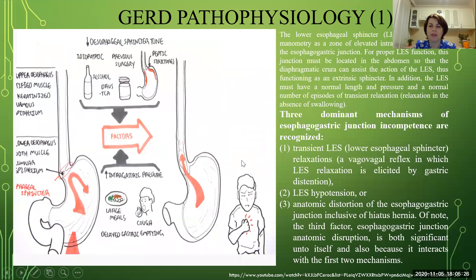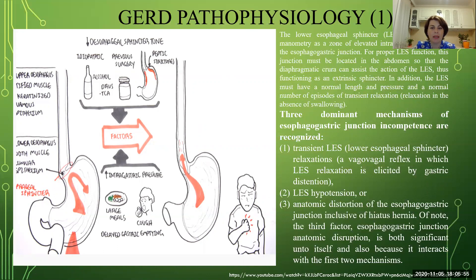The lower esophageal sphincter is defined by manometry as a zone of elevated intraluminal pressure at the esophagogastric junction. For proper function, this junction must be located in the abdomen so that the diaphragmatic crura can assist the lower esophageal sphincter, functioning as an external sphincter. This sphincter must also have a normal length, normal pressure, and a normal number of episodes of transient relaxation — meaning relaxation in the absence of swallowing.